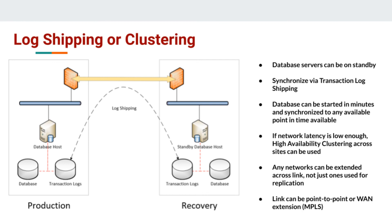In the case of a high availability cluster, your server on the production side will have a peer in the recovery side that's kept in sync across this network connection, and they can simply fail over — in other words, stop services on the production side and start the same services on the recovery side in almost real time. In both scenarios, depending on the setup, you can be set up to have an automatic failover happen where your failover is near instantaneous, maybe a minute or two of downtime while it switches over, or it may require manual intervention, which is usually a very quick process as well.